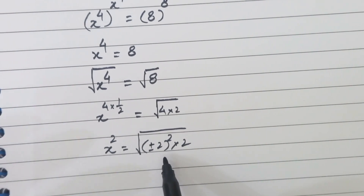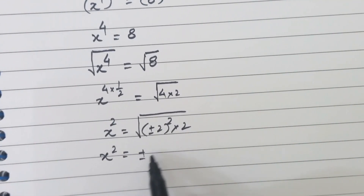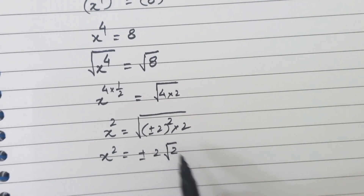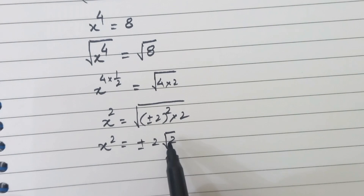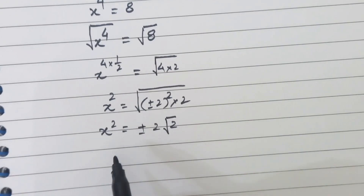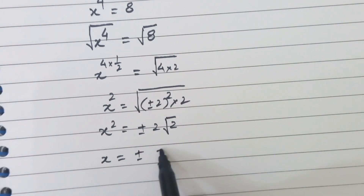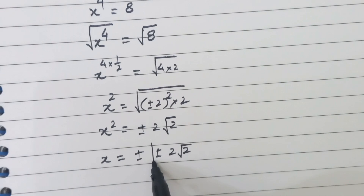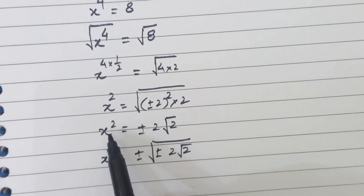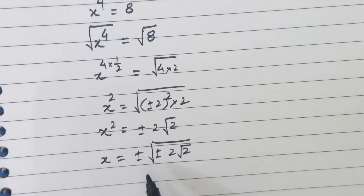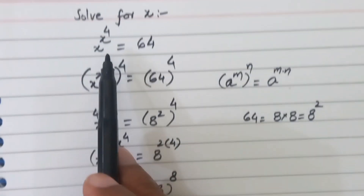So we can write it as plus minus 2 squared times 2, which gives x is equal to plus minus 2 root 2. Taking square root on both sides again, we get x equal to plus minus root of plus minus 2 root 2. These are the 4 solutions of the given equation s to the power x to the power 4 is equal to 64.